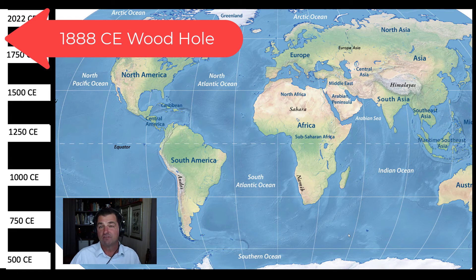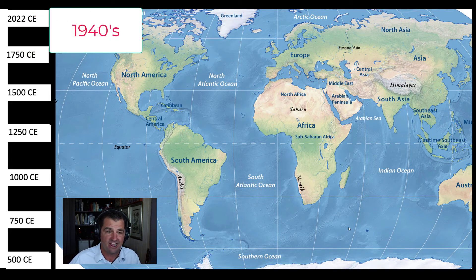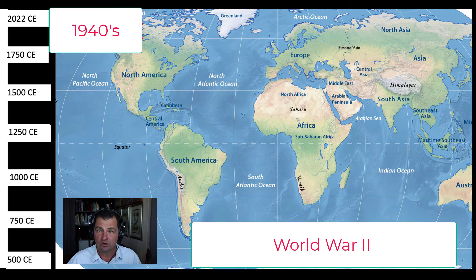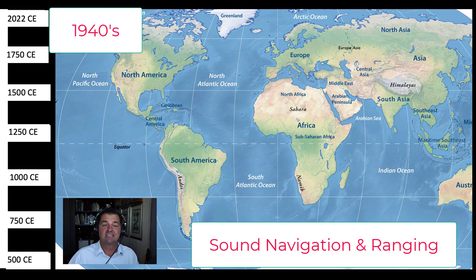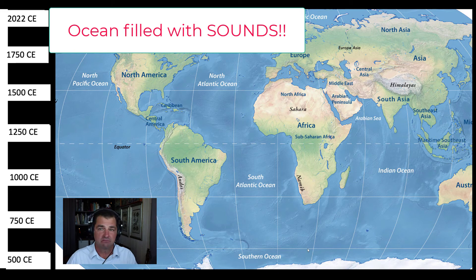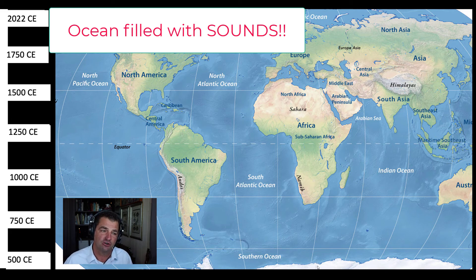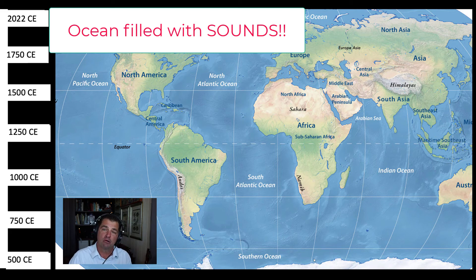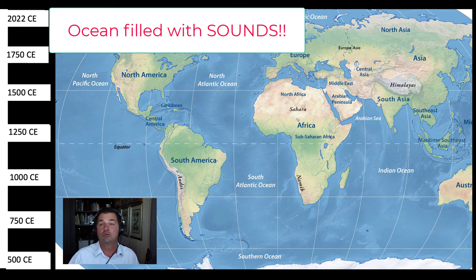In the 1940s, sonar — Sound Navigation And Ranging — became important for submarine warfare during World War II. People began discovering that the ocean was full of sounds, contrary to the earlier belief that it was totally silent. With sonar, scientists found that many organisms were making sounds. This became a matter of national security: the military needed to distinguish animal sounds from submarines, which drove significant funding into sonar research focused on marine animals.